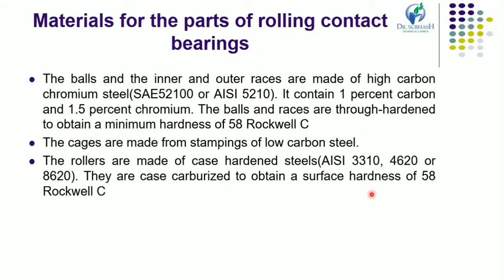Now let us see the materials used for the parts of rolling contact bearings. Thrust ball bearings are used where heavy thrust loads are involved, for example in worm gearboxes and crane hooks. The balls and the inner and outer races are made of high carbon chromium steel like SAE 52100 or AISI 52100.